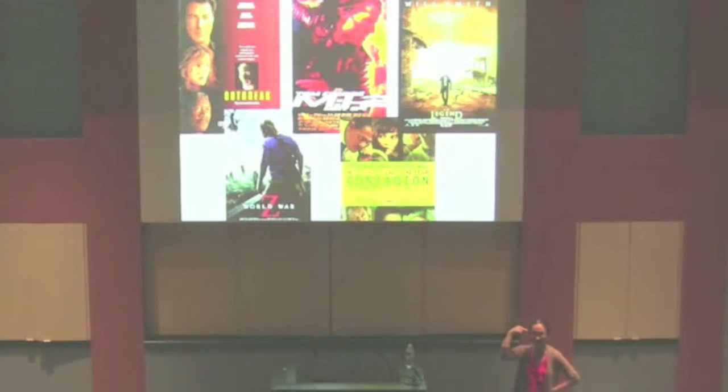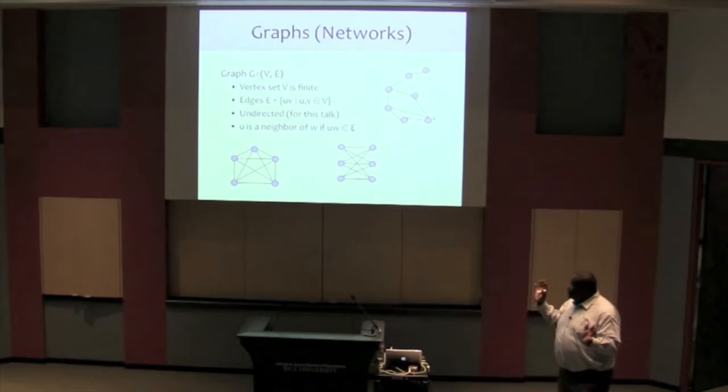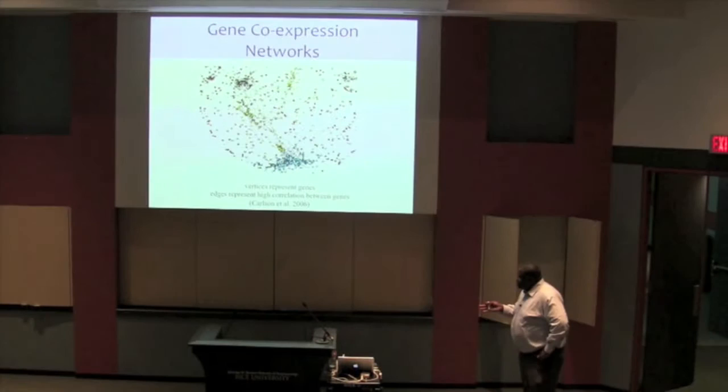So V is called a vertex set — it's basically a circle. E are called edges, and it basically connects the circles.